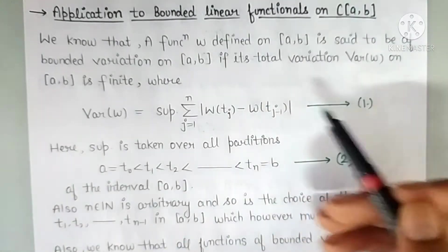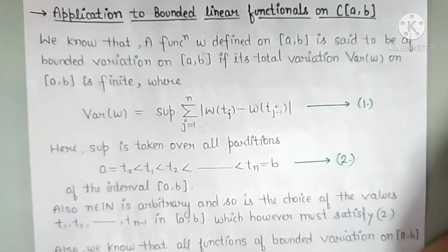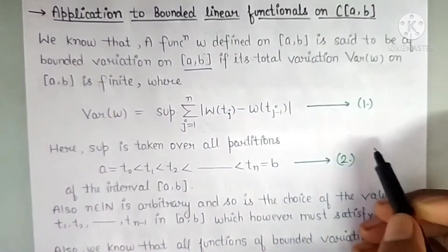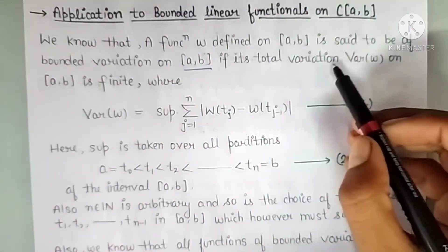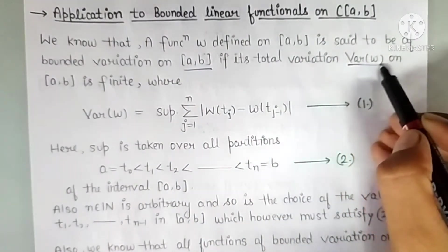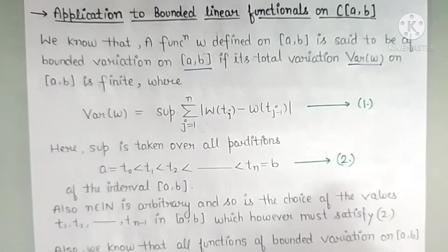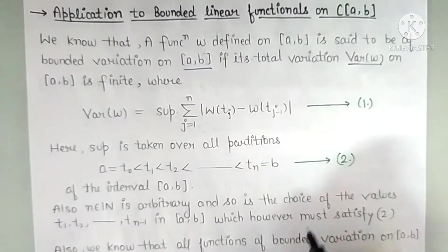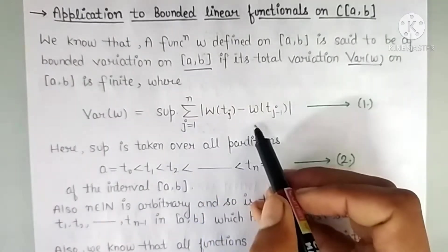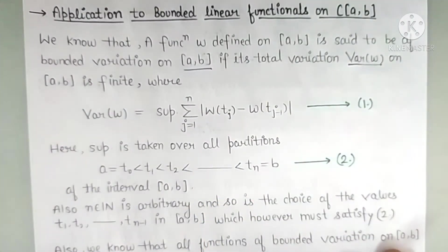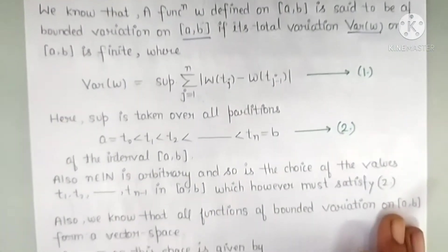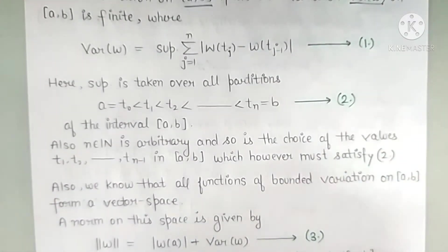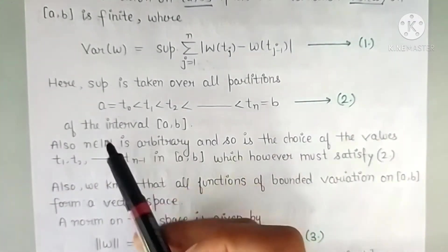We know that when we say a function is of bounded variation on a closed interval [a,b], its total variation — V(w) on [a,b] — is finite, where the total variation is the supremum of a sum taken over all partitions of [a,b].